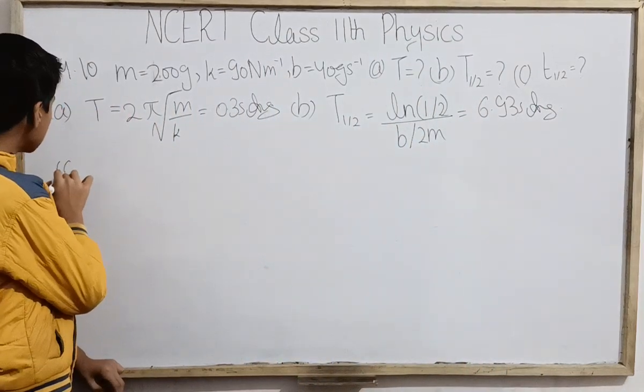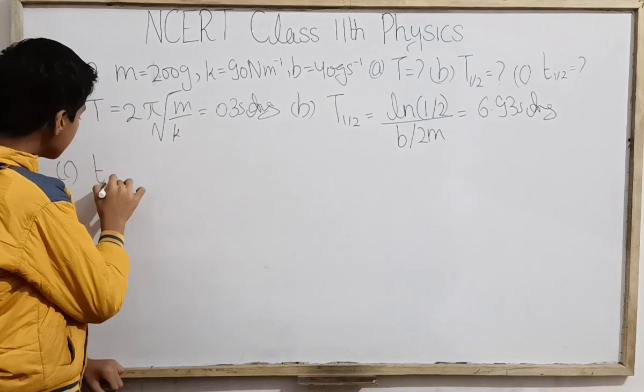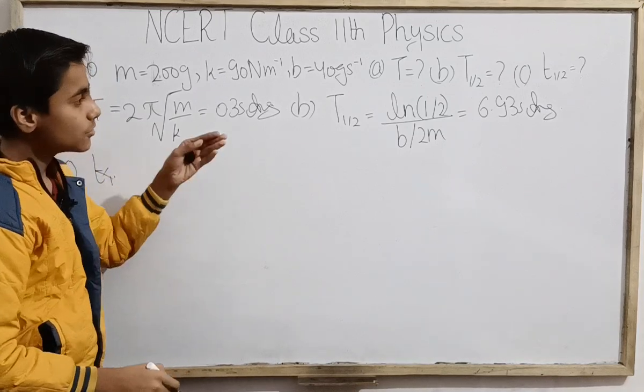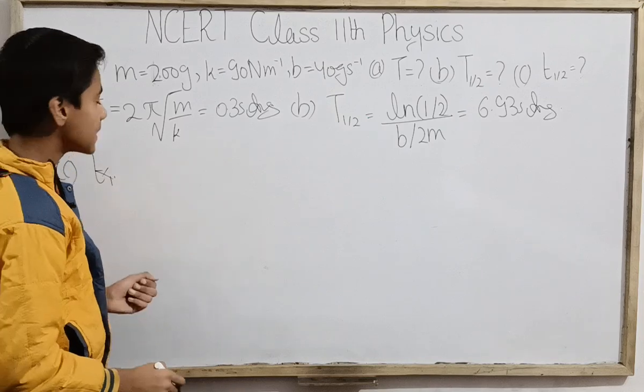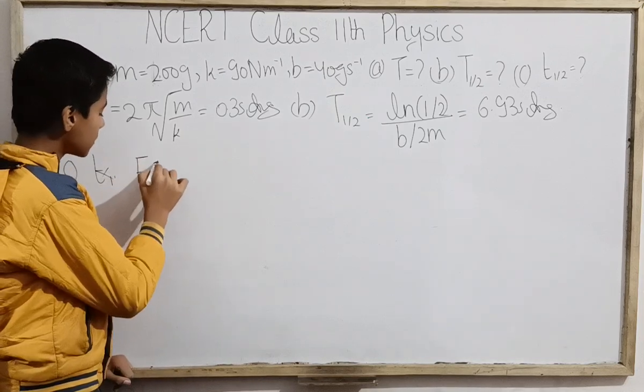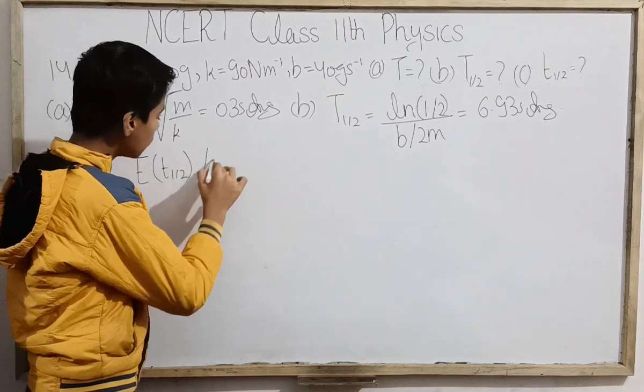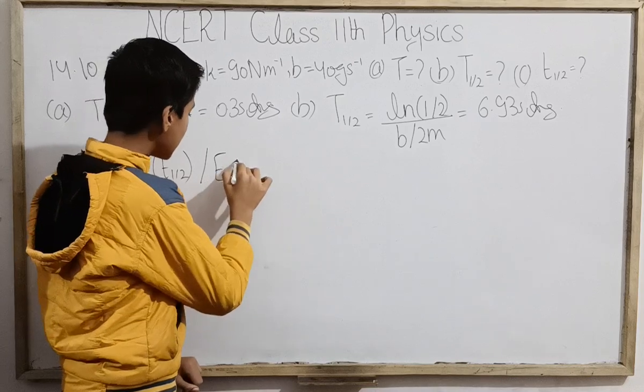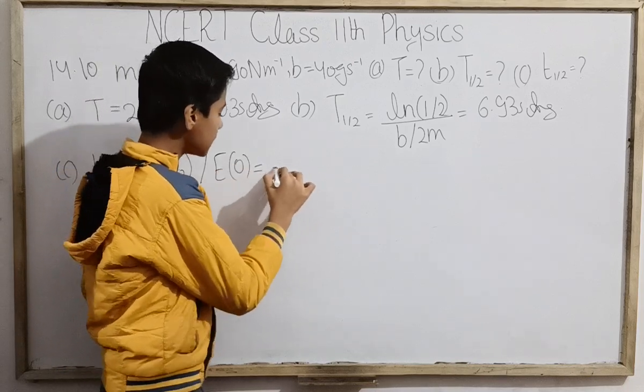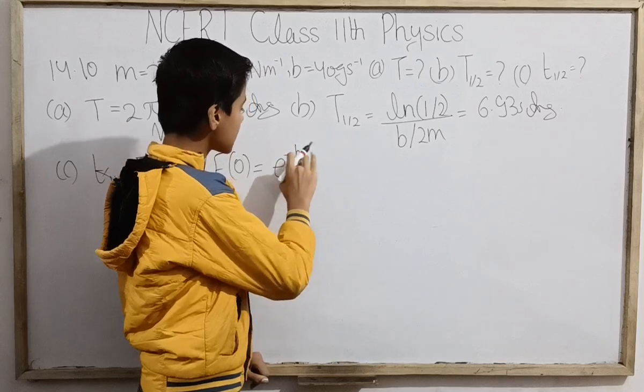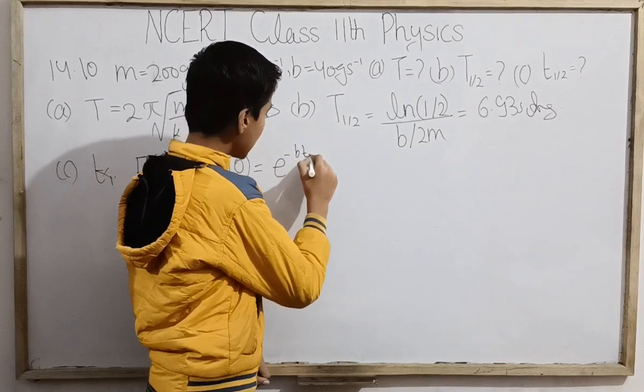For part (c), total mechanical energy falls to half of its initial value. So E(t_half)/E(0) = 1/2 = exp(-b·t_half/m).